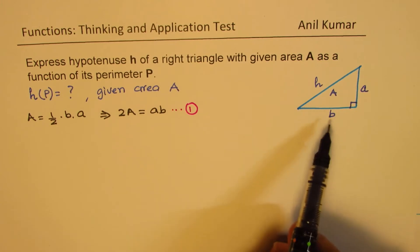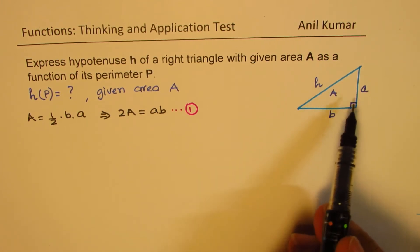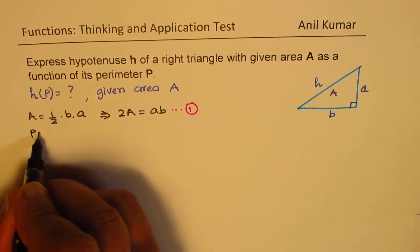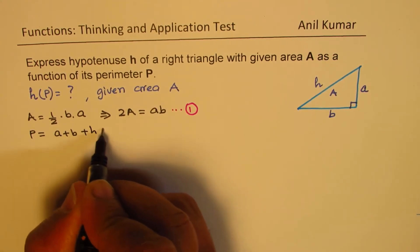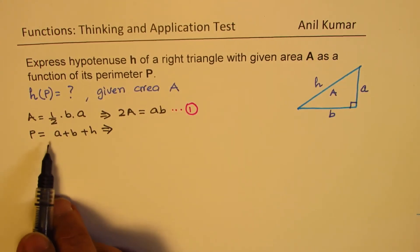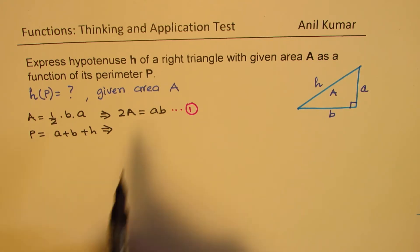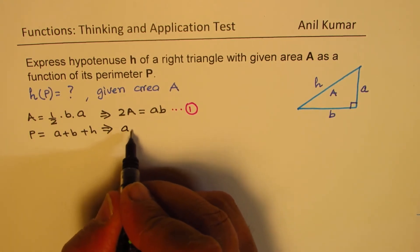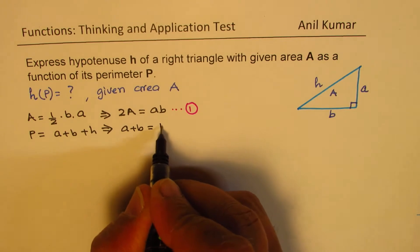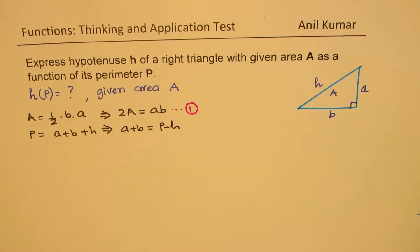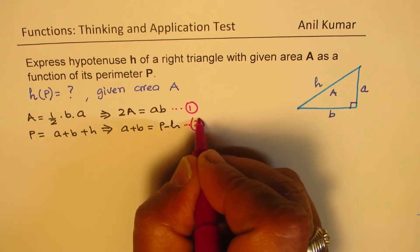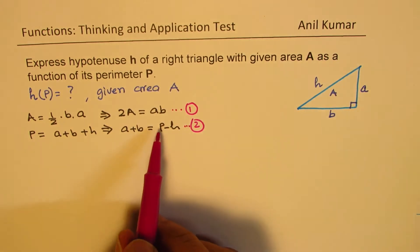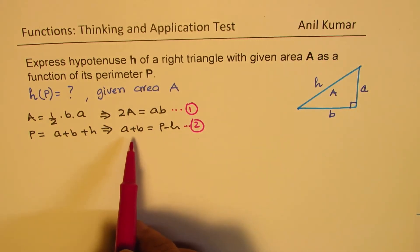Now, perimeter is defined as sum of all the sides. So we can write perimeter equals a plus b plus h. And that we can write in terms of P and h as a plus b equals P minus h. So we call this as our second equation. So we are relating P and h in terms of a and b.